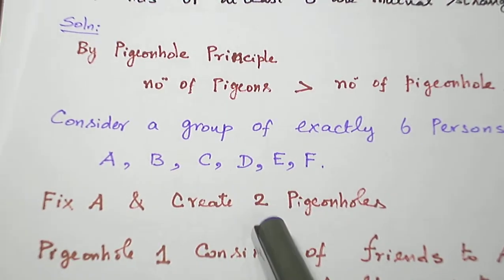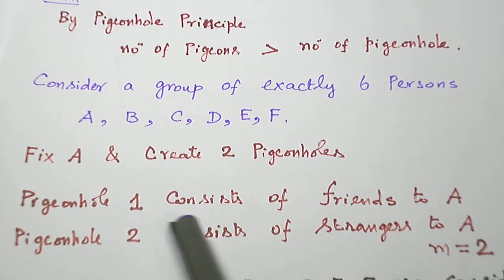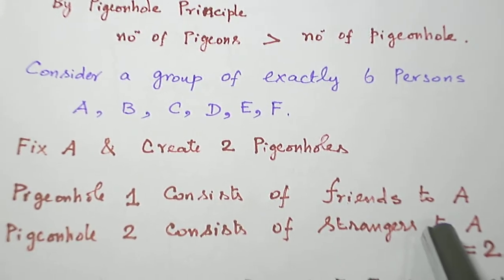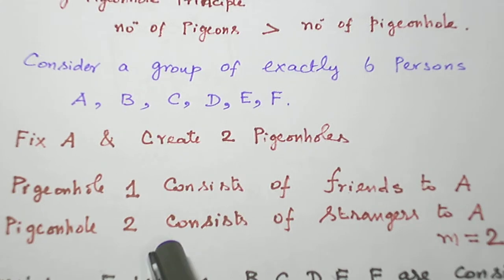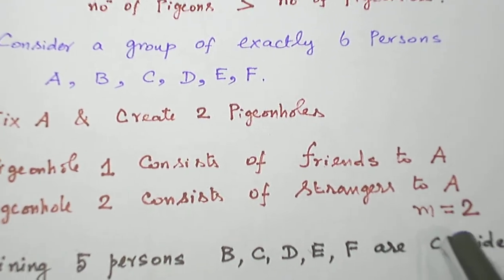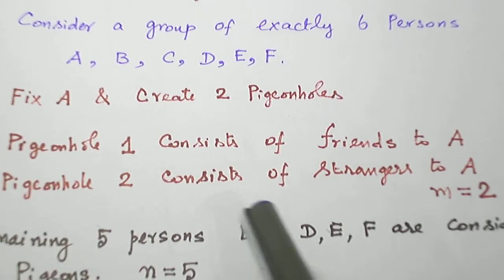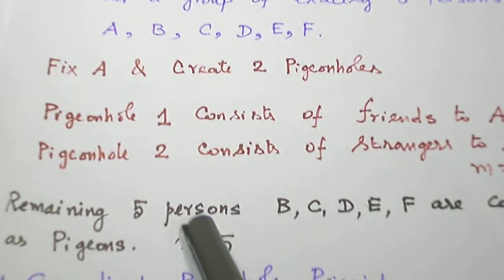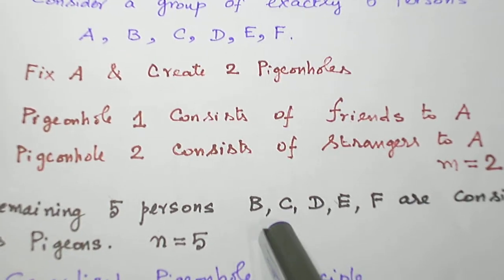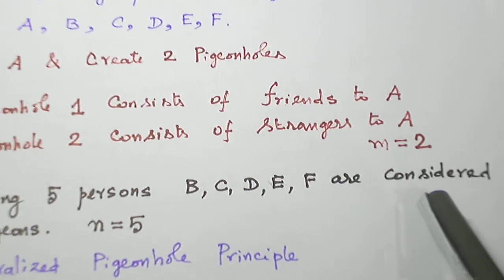Now I am going to create 2 pigeonholes. First pigeonhole consists of friends to A and second pigeonhole consists of strangers to A. So the number of pigeonholes is 2. Now A is the reference, so I take the remaining 5 persons B, C, D, E, F as pigeons.